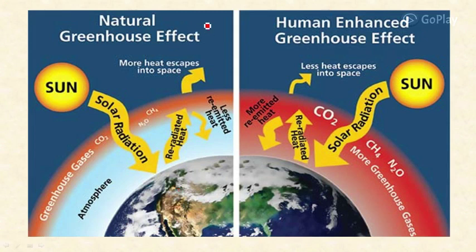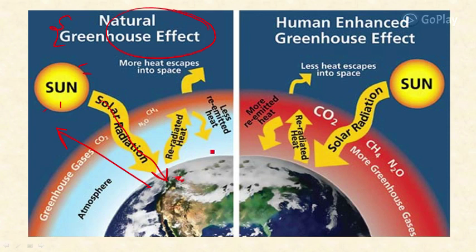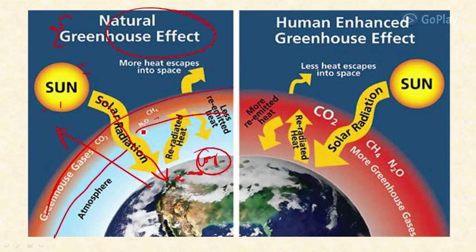Looking at the figure for the natural greenhouse effect: the Sun, being very hot, emits short-wavelength, high-energy radiation. Some is reflected back to the atmosphere and some is absorbed by the Earth. The Earth then re-emits long-wavelength infrared radiation because it is cooler than the Sun. The greenhouse gases — carbon dioxide, nitrous oxide, and methane — act as a blanket on the lower atmosphere, blocking some of the infrared radiation. Some escapes into space, and the absorbed energy is re-emitted and dispersed, creating warmer conditions suitable for living beings.